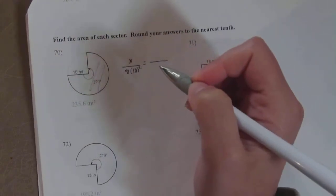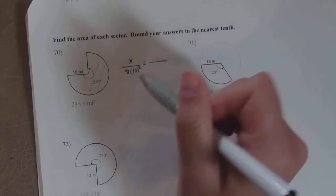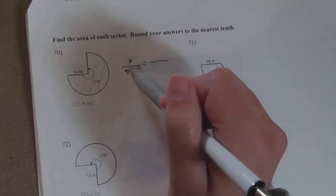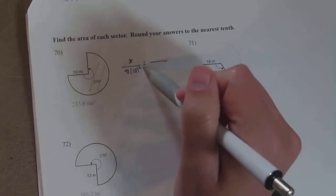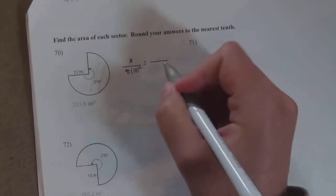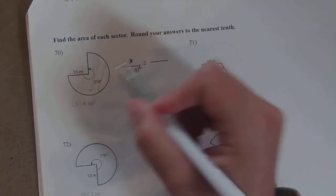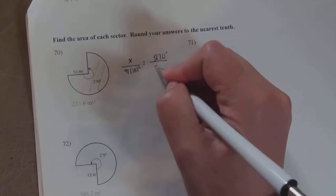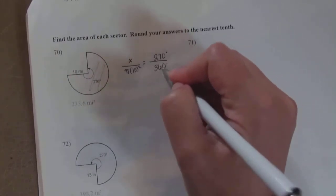The common mistake that I see is that kids forget that it's the area of the whole circle that goes here, and they just start plugging in their radius and not the area formula. So just watch that.